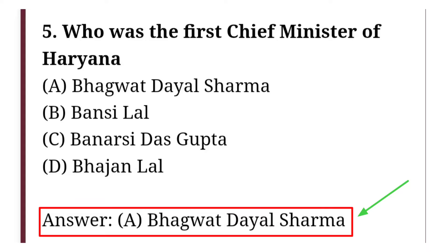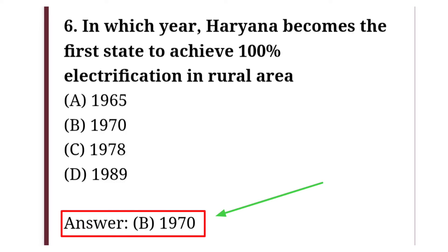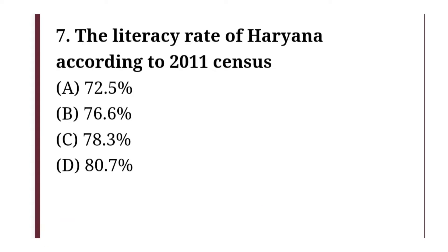Who was the first chief minister of Haryana? The correct answer is option A, that is Bhagwat Dayal Sharma. In which year did Haryana become the first state to achieve hundred percent electrification in rural areas?